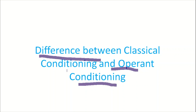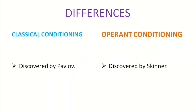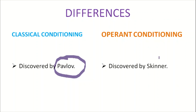First of all, let us see who discovered these two theories. Classical conditioning was first discovered by Pavlov, accidentally during one of his experiments. Operant conditioning was discovered by Skinner, and therefore he is also known as the father of operant conditioning.